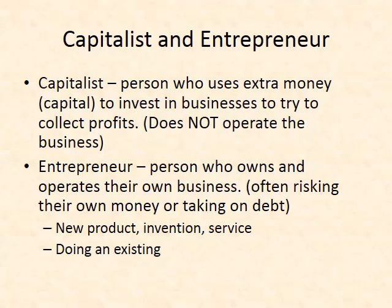A capitalist is a person who uses extra money or resources — capital — to invest in a business in order to make more profits. A capitalist does not operate the business; they loan or invest money and hope to get profits if the business does well. This is different from an entrepreneur. An entrepreneur is a person who owns and operates their own business — often risking their own money or taking on personal debt to start it. Entrepreneurs are usually characterized by a new product, invention, or service, or by doing an existing service or making an existing product better. An entrepreneur owns, is in charge of, and operates the business.